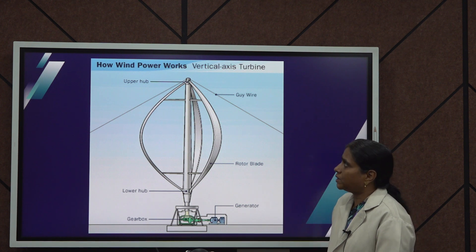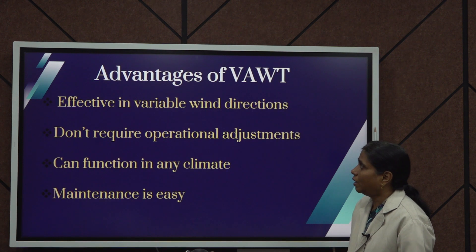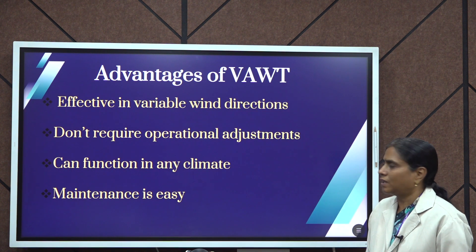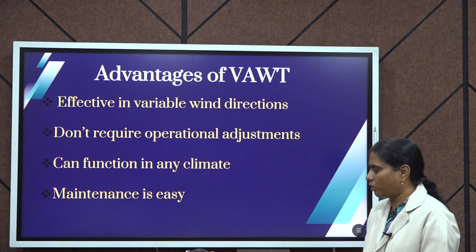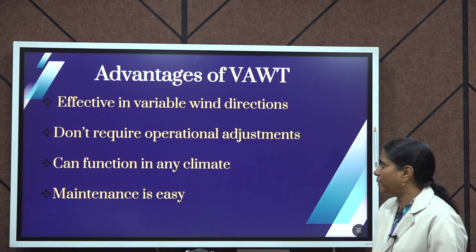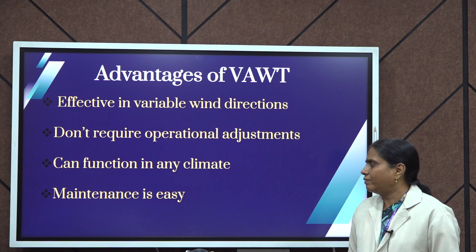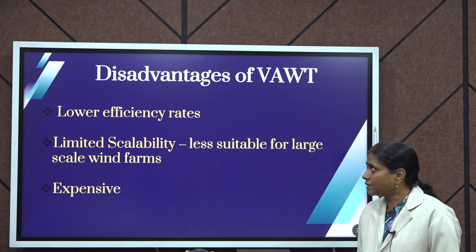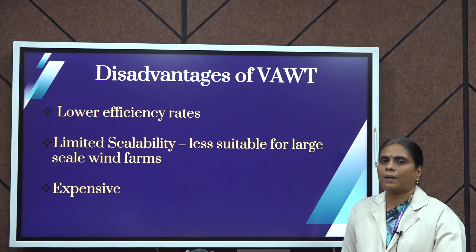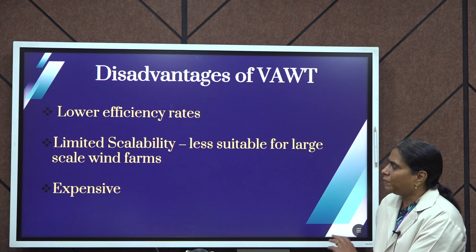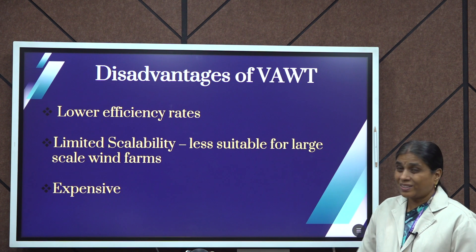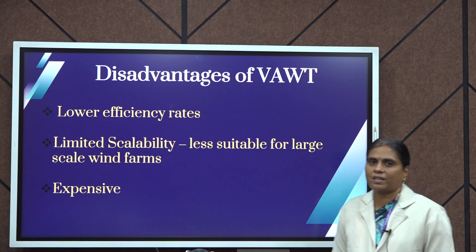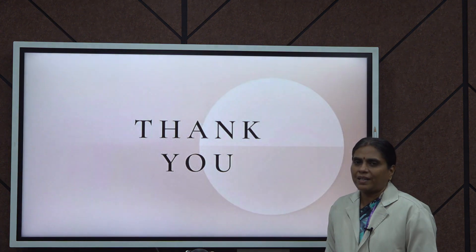The advantages of the vertical axis wind turbine are: it is very effective in variable wind directions, does not require any operational adjustments since everything is at the base, can function in any climate, and maintenance is very easy. The disadvantages include lower efficiency rates when compared to horizontal axis wind turbines, limited scalability making it unsuitable for large-scale wind farms, and it is somewhat expensive. We will meet in the next video. Thank you.